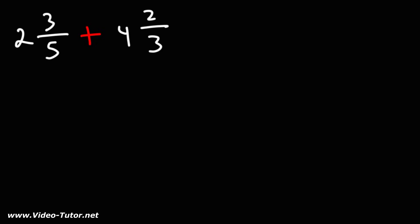In this video we're going to talk about how to add mixed numbers. What I like to do is expand the mixed number. So 2 and 3/5 is 2 plus 3 over 5. 4 and 2/3 is 4 plus 2 over 3.